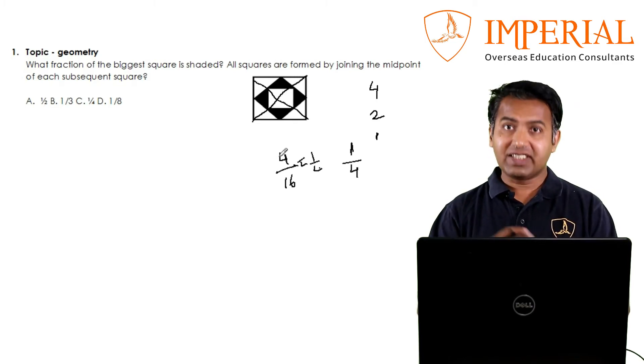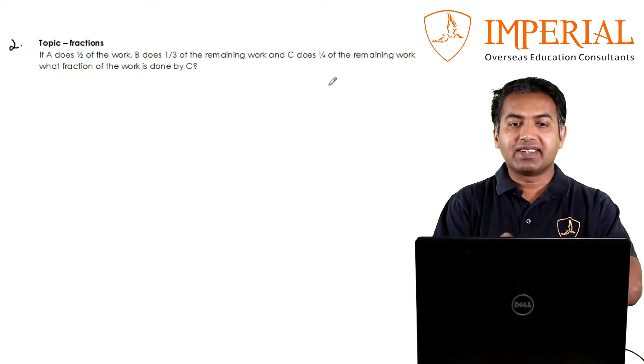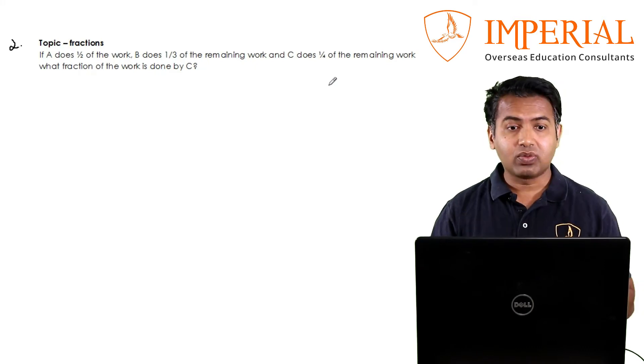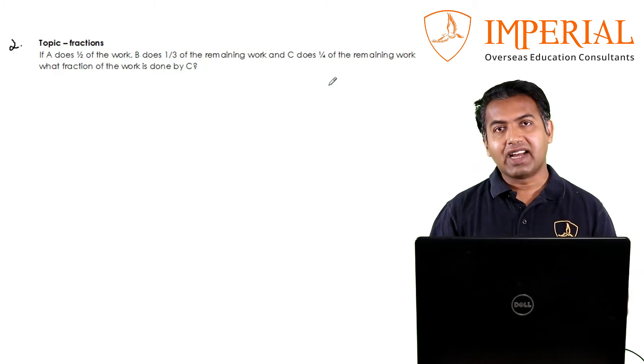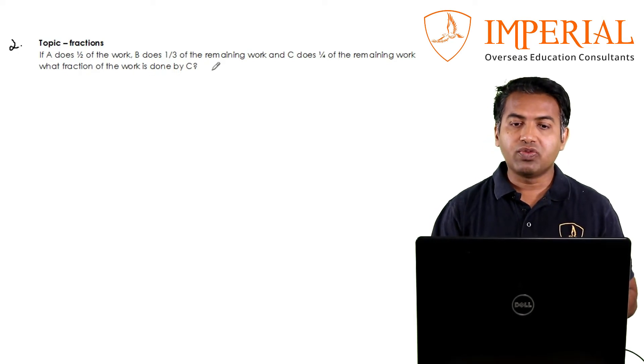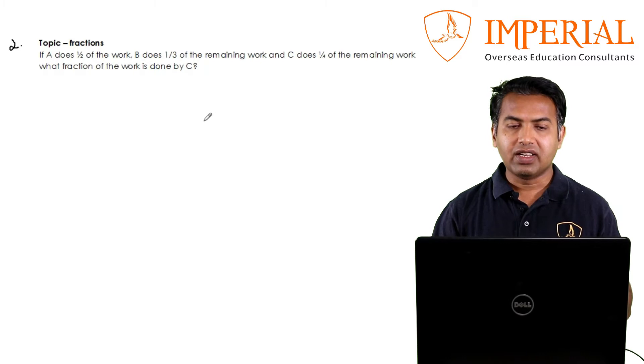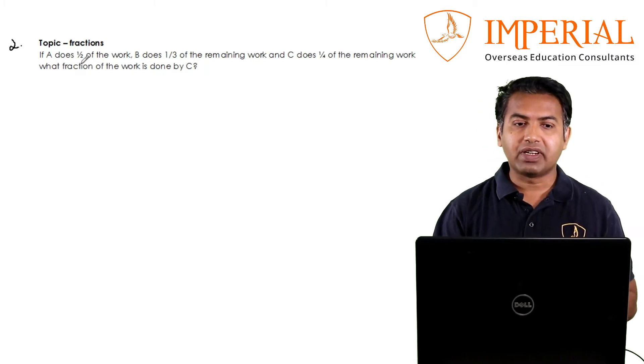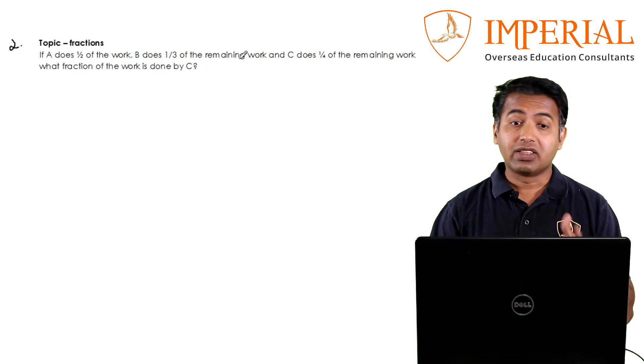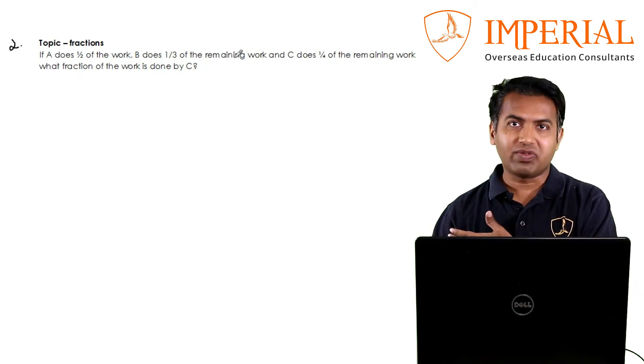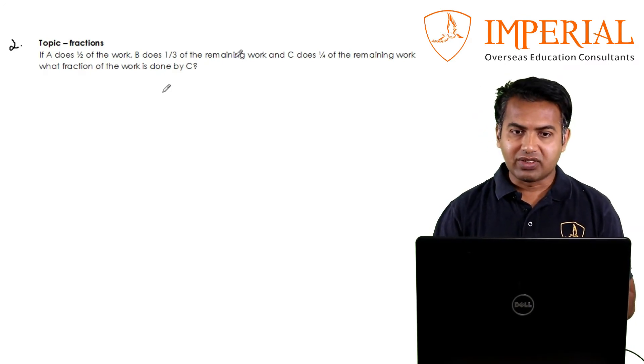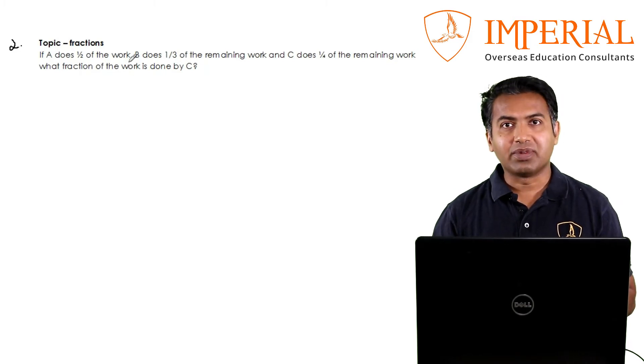Second question, and this topic is again fractions. A does half of a work, B does one third of the remaining work, and C does one fourth of the remaining work. What fraction of the work is done by C? Here again I teach one trick to do it really fast without a mistake. If you try to do it without a trick, you start with x or 1, and you will end up with lot of fractions. For example, A does half so left work is half, then B does one third of the remaining, so B does one third of half which is one sixth. The remaining is half minus one sixth and a lot more fractions. It's very prone to errors.